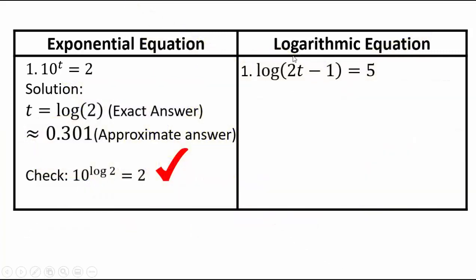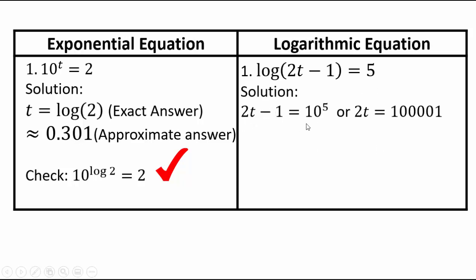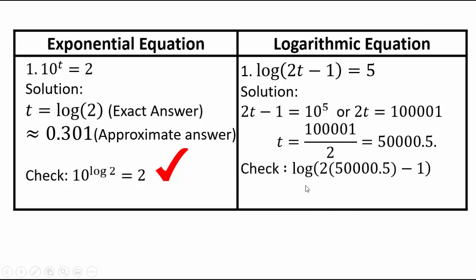To get rid of the log base 10 in log(2t − 1) = 5, rewrite it as the equivalent exponential equation: 2t minus 1 equals 10 to the power 5, which is 100,000. Adding 1 gives 100,001 equals 2t, so t equals 50,000.5. To check: log of 100,000 equals 5, which confirms the solution. Please always go back and check your solutions.